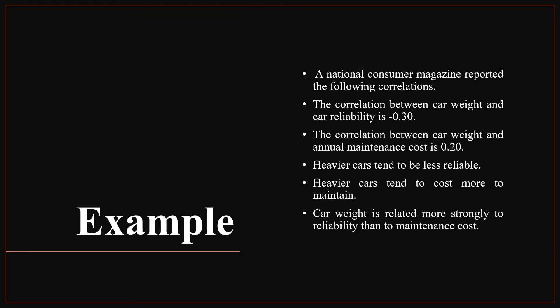Here is a small example related to the correlation coefficient. A national consumer magazine reported the following correlations: the correlation between car weight and car reliability is minus 0.30, and the correlation between car weight and annual maintenance cost is 0.20. Heavier cars tend to be less reliable, and heavier cars tend to cost more to maintain. Car weight is related more strongly to reliability than to maintenance cost.